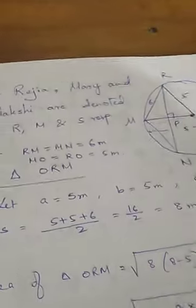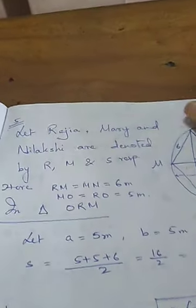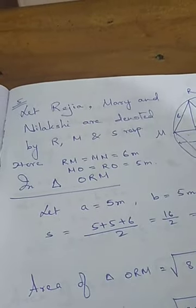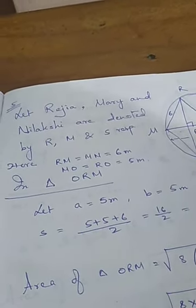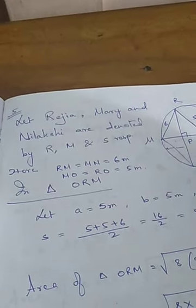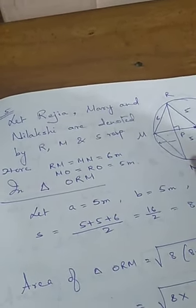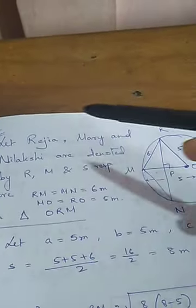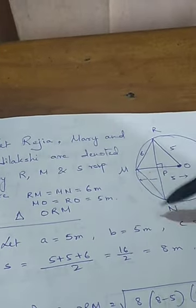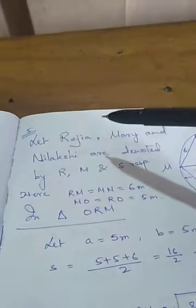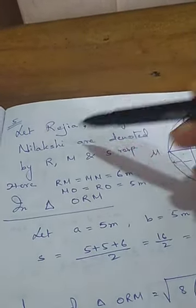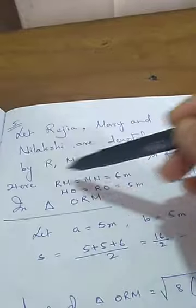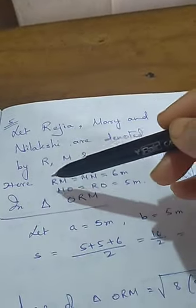One more problem — I want to show you this as the video is getting long. I will send you this question. The solution I sent is from your previous book where the names are different. In the new book, three girls are Rajia, Mary, and Nilakshi. Let Rajia, Mary, and Nilakshi be denoted by R, M, and S respectively.